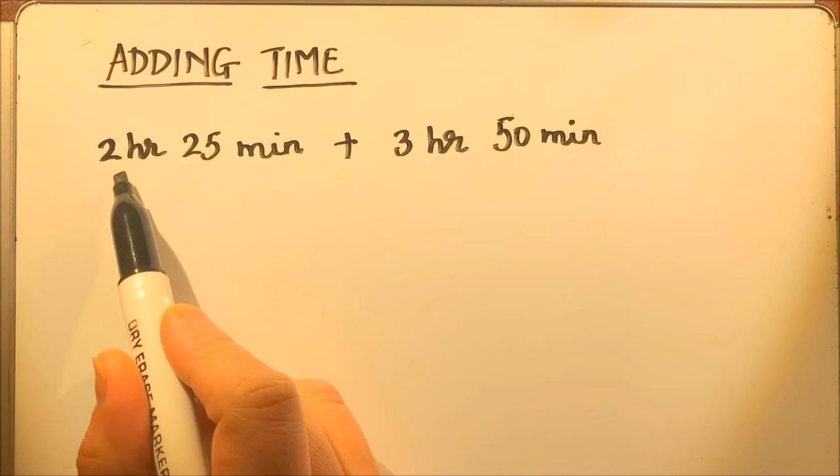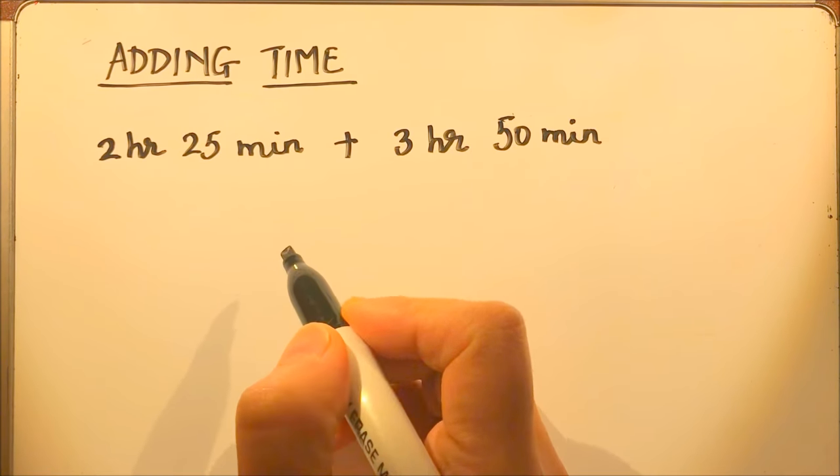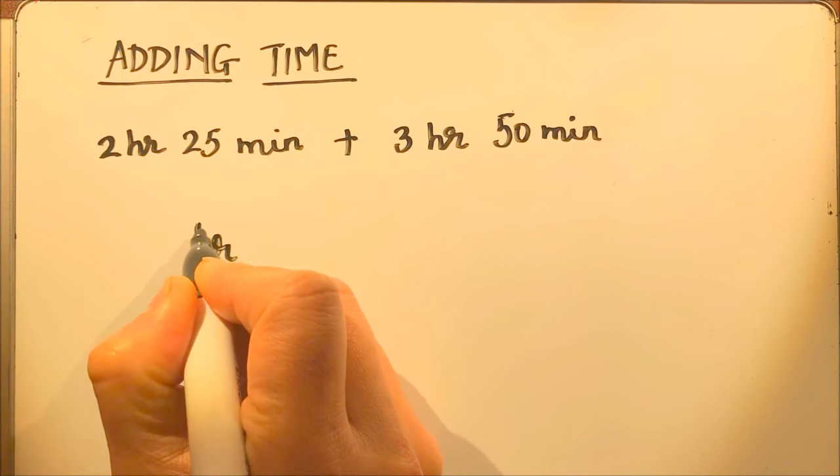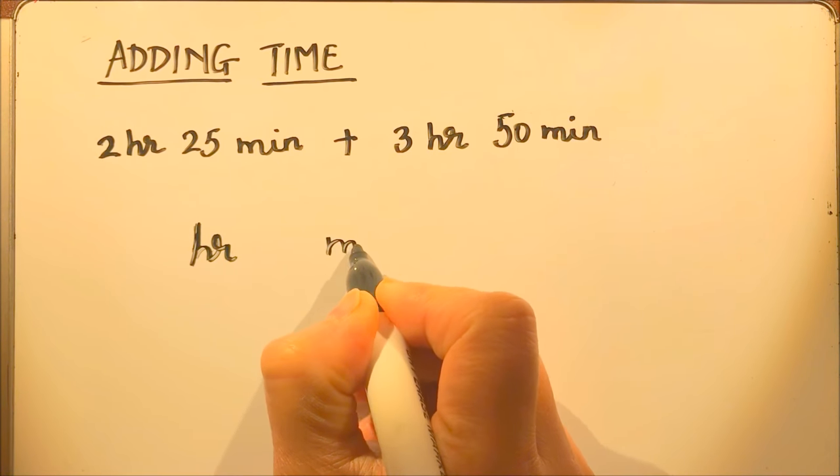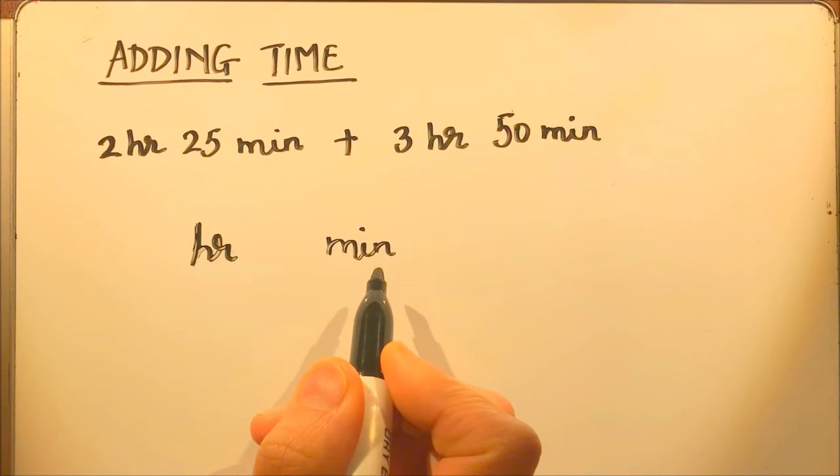So first we have an example, 2 hour 25 minutes and 3 hours 50 minutes. So we will add and on this side we will write minutes. Like we have 1s and 10s, similarly we have minutes and hours.